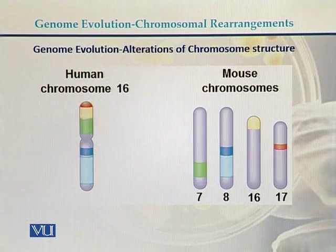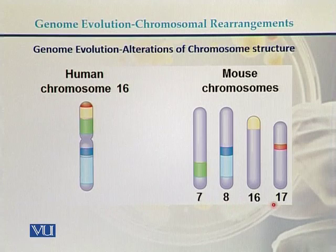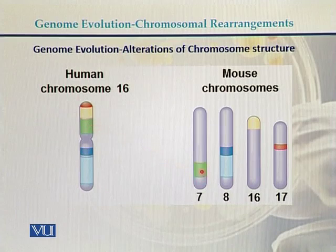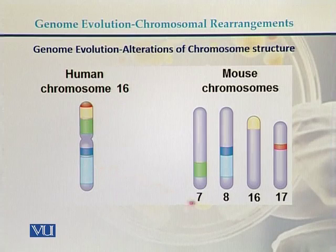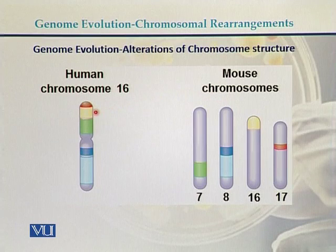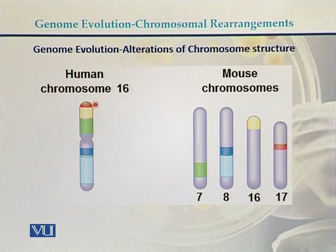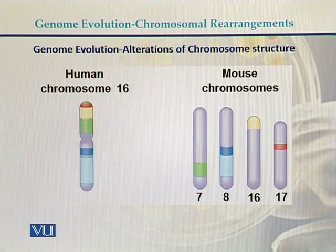There is another example of chromosomal rearrangements: human chromosome 16 compared with mouse chromosomes 7, 8, 16, and 17. The green-colored part of human chromosome 16 has homology with mouse chromosome 7. The q-arm of human chromosome 16 has homology with mouse chromosome 8. Another part of human chromosome 16 has homology towards the telomere with mouse chromosome 16, and the region homologous to mouse chromosome 17 is found towards the telomere end of human chromosome 16.